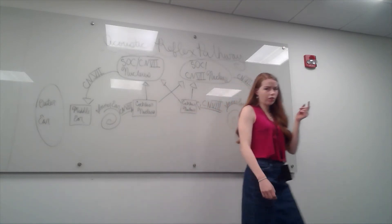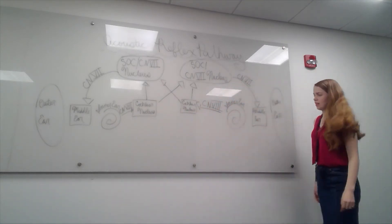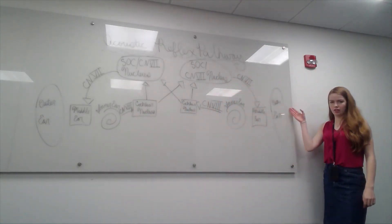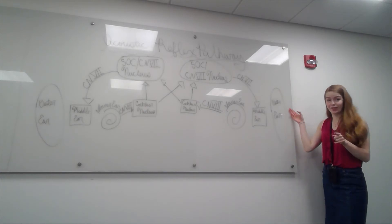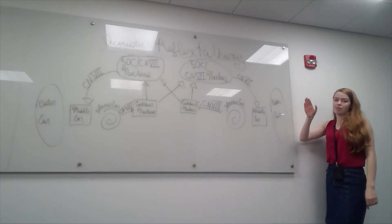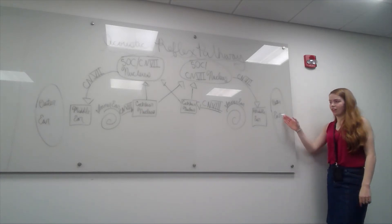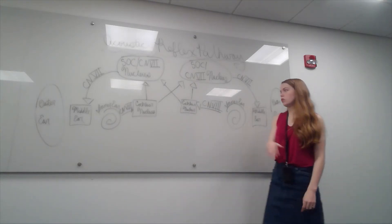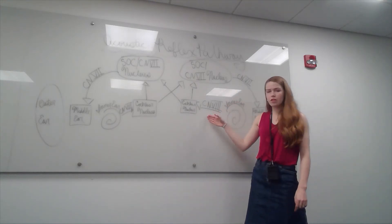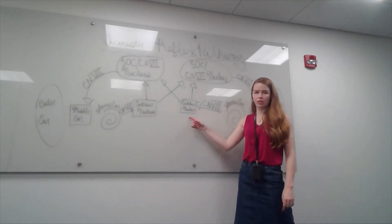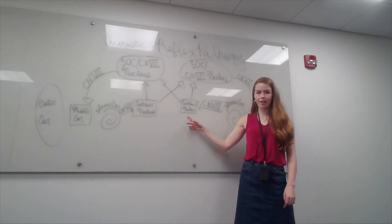So let's start over here where our stimulus is in our left outer ear for that right contralateral pathway. Stimulus into the left outer ear, to the left middle ear, to the inner ear, to cranial nerve number eight — or the auditory nerve — to the cochlear nucleus on the left side.